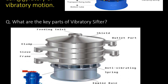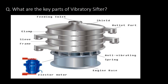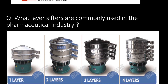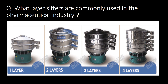What are the key parts of a vibratory shifter? You can refer to the pictorial below for key parts. Key parts include: feeding inlet, shield, outlet port, anti-vibrating spring, engine base, electro motor, C-frame, and clamp.